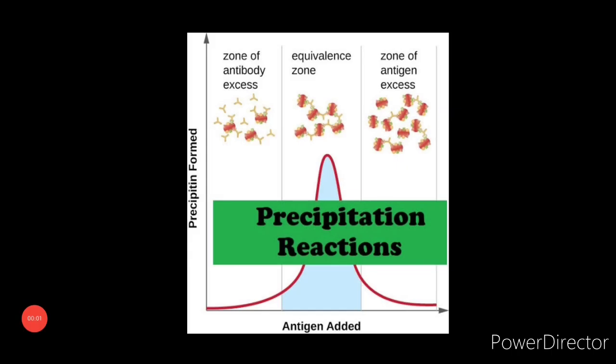Precipitation reactions: antibody and soluble antigen interacting in aqueous solution form a lattice that eventually develops into a visible precipitate. Antibodies that aggregate soluble antigens are called precipitins. Although formation of the soluble antigen-antibody complex occurs within minutes, formation of the visible precipitate occurs more slowly and often takes a day or two to reach completion.